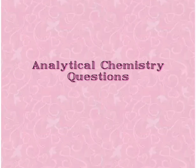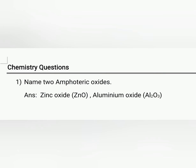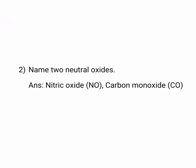Today we'll learn some important questions from analytical chemistry. These questions are also important for the 10th board exam and can also be asked in a practical way. First question: name two amphoteric oxides. Answer: zinc oxide and aluminium oxide. Second question: name two neutral oxides. Answer: nitric oxide and carbon monoxide.